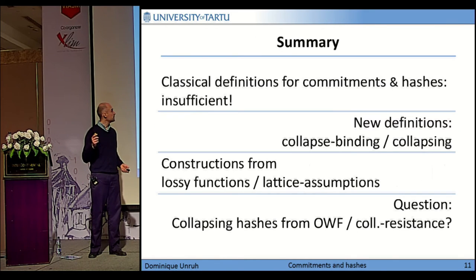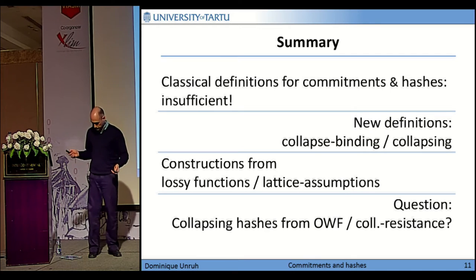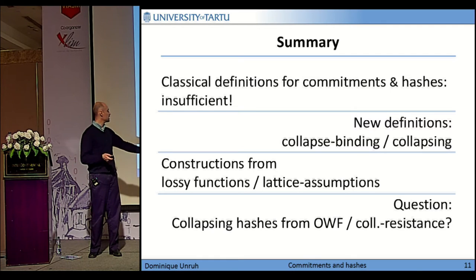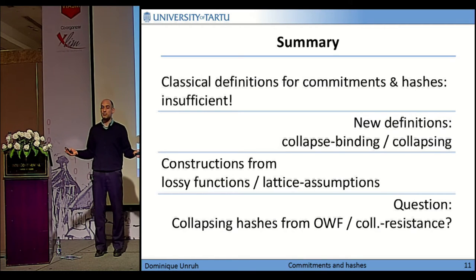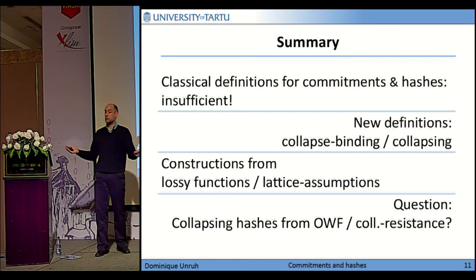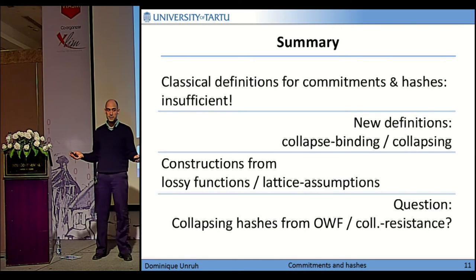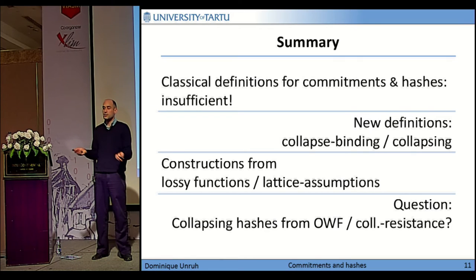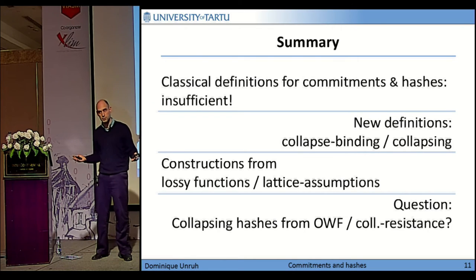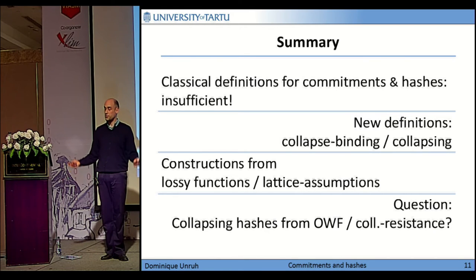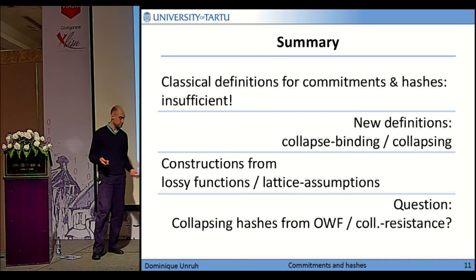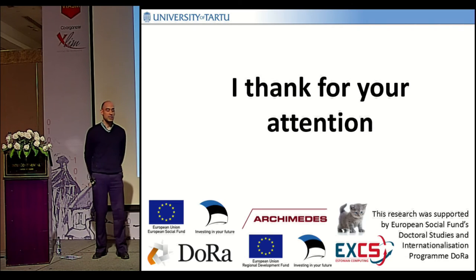I have more results but no time so I skip them, and I only mention my main interesting open question. The main interesting question is: can we construct collapsed binding commitments on even weaker assumptions? Can we do it perhaps with one-way functions or with collision-resistant hash functions? Because lossy functions are already a relatively powerful tool, we would ideally like to do it with one-way functions, since classically we can do computationally binding, statistically hiding commitments even using just one-way functions. So that's an open question. Thank you for your attention.